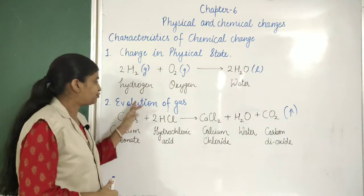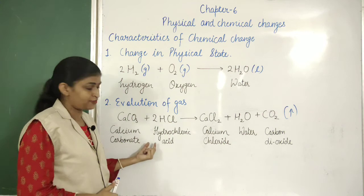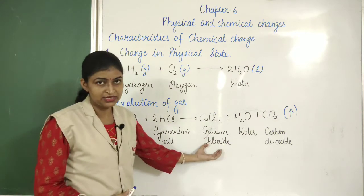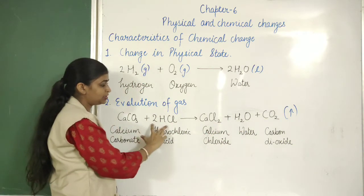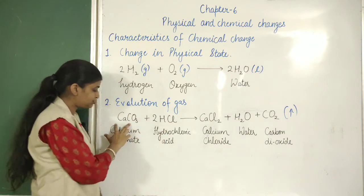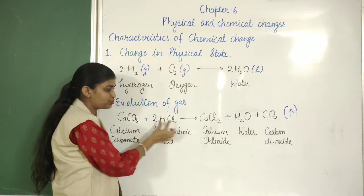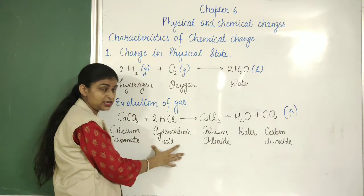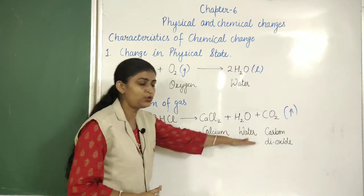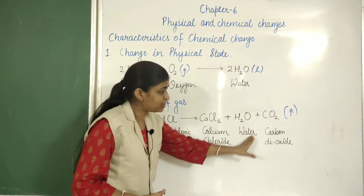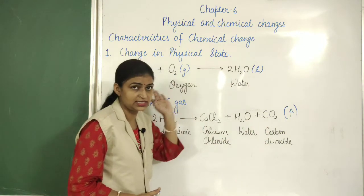The second characteristic is evolution of gases. Evolution of gases means that in a chemical change, along with the products, a gas can be released. For example, CaCO3 — calcium carbonate — reacted with 2HCl — two molecules of hydrochloric acid. When these two react, they give three products: the main products are calcium chloride and water, and one more gas is produced — that is CO2, carbon dioxide — and it is released.